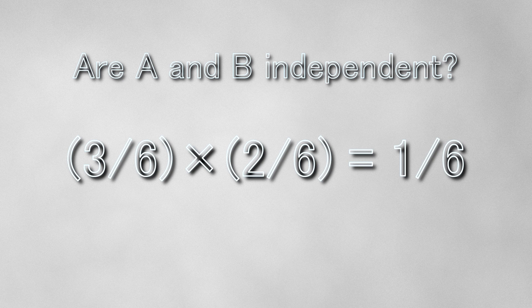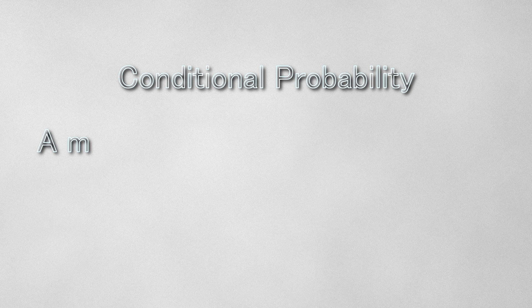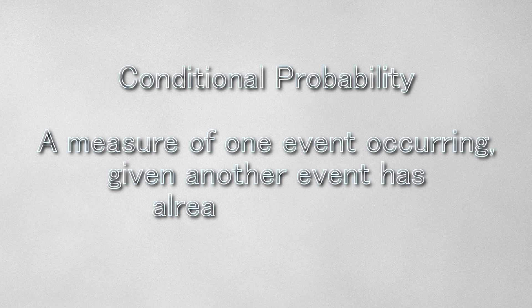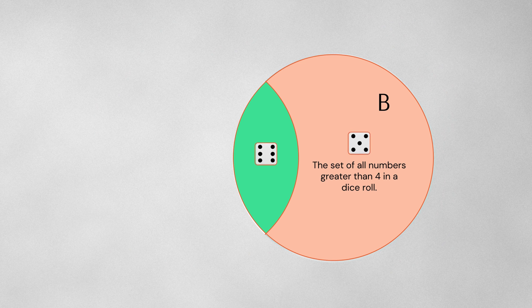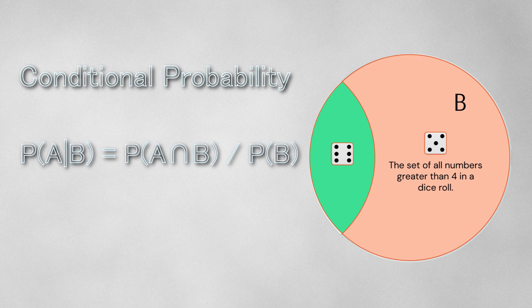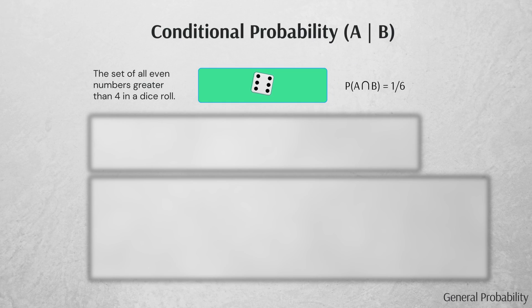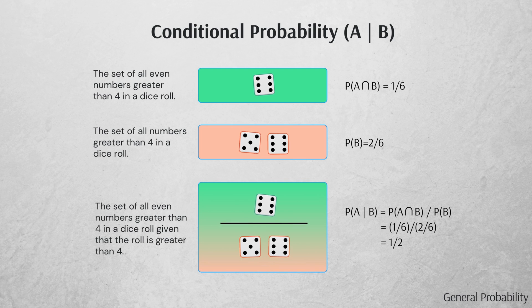Although the math holds true, this formula is not super intuitive. To get a more intuitive understanding, we first look at conditional probabilities. A conditional probability is a measure of one event occurring given another event has already occurred. Going back to our dice roll example, let's calculate the probability of A given B. We've defined B as the set of all dice rolls greater than 4 — the rolls 5 and 6 — and of those two rolls, only 6 is even. We can rewrite the conditional probability of A given B as the probability of A intersection B divided by the probability of B. From earlier, the probability of A intersection B is 1 over 6 and the probability of B is 2 over 6, so the probability of A given B is 1 over 6 divided by 2 over 6, which equals 1 half.